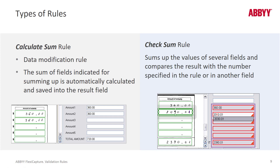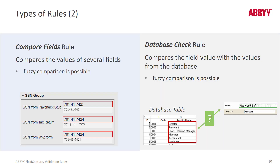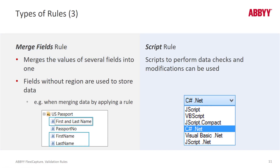We talked about comparisons and database checks already. We can also do reverse database lookups — for instance, we could pull in a code and place it in a field without region. And merging is very, very popular. It's common for date of birth fields to capture the month, day, and year separately, and you'll perhaps get better quality and then merge that data to a date of birth field. And once again, the sky is the limit with scripted rules.